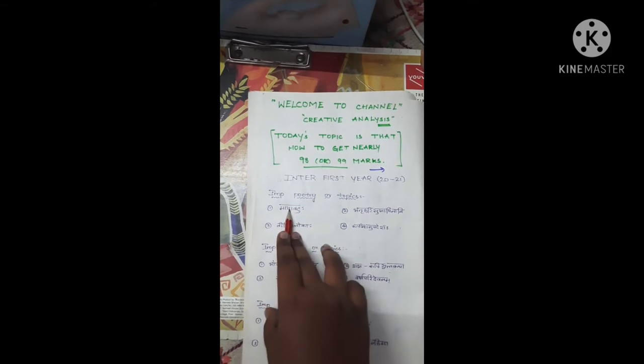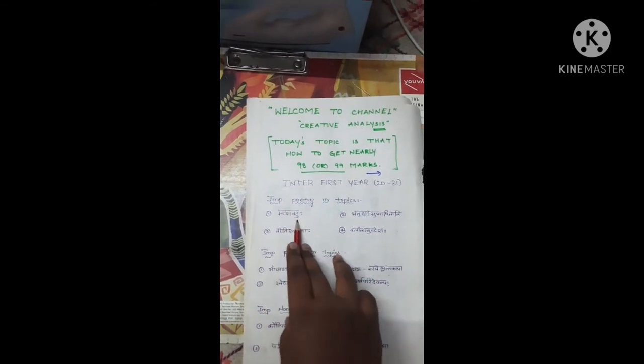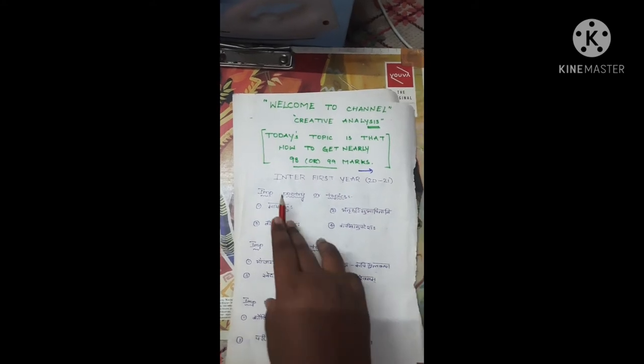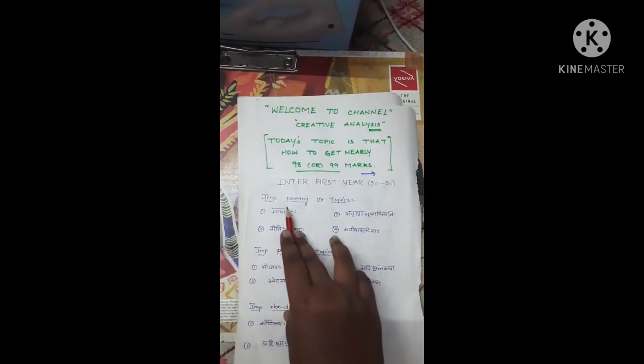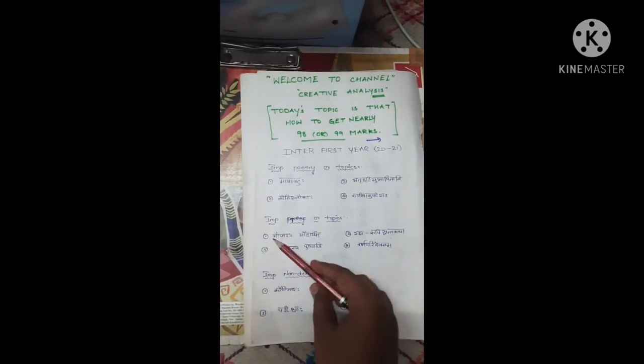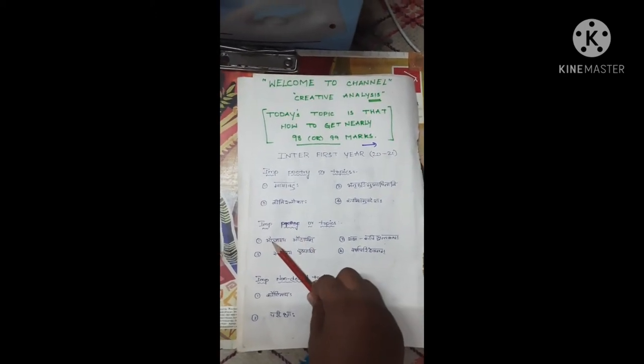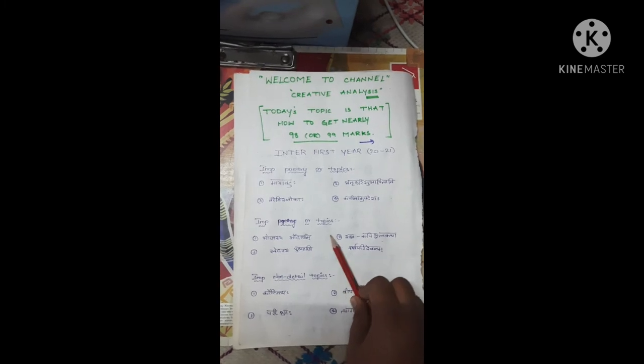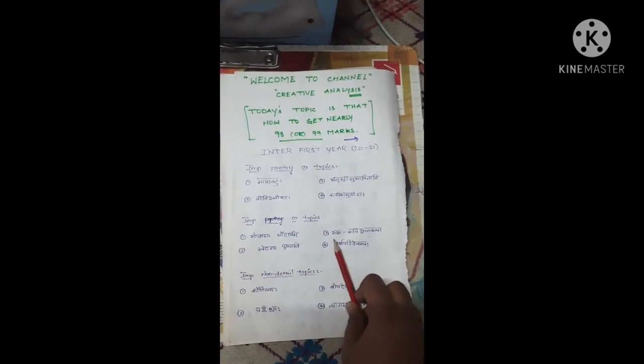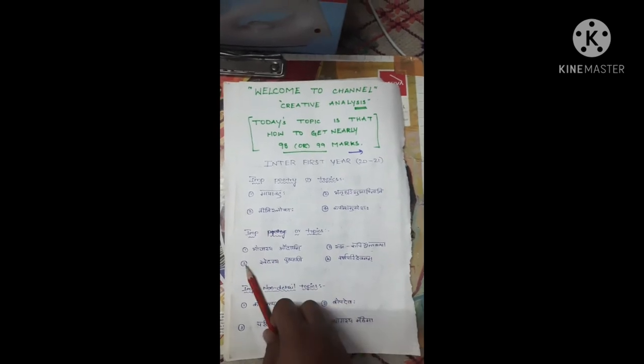In poetry, Niti Sloka is very important. From Maya Vatuhu there will be one essay question. Other important prose topics include Boyasya Audariyam and Shasha Kapinjala Kaha Kata.